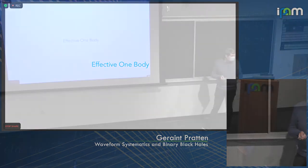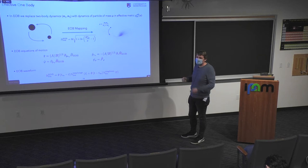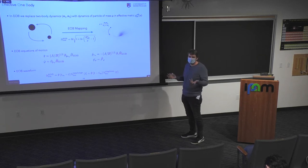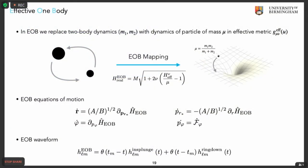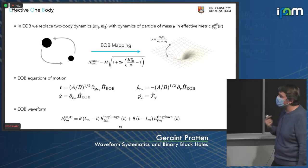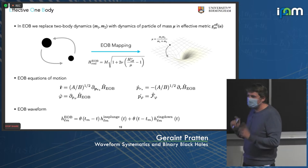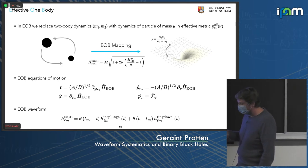Now let's talk about effective one-body (EOB) models. In a nutshell, EOB replaces the two-body dynamics with a test particle of some reduced mass mu moving in some effective metric, where the metric is deformed to include extra physics — a deformed Schwarzschild or Kerr spacetime. You construct an effective reduced Hamiltonian, write down Hamilton's equations, and solve the equation of motion. This allows you to generate both the dynamics and the EOB waveform itself, which is why people say EOB is in some sense more fundamental.